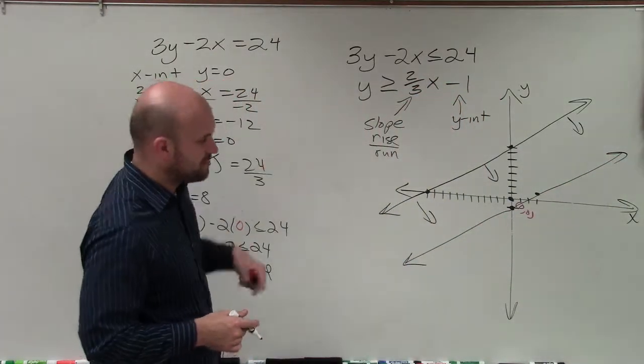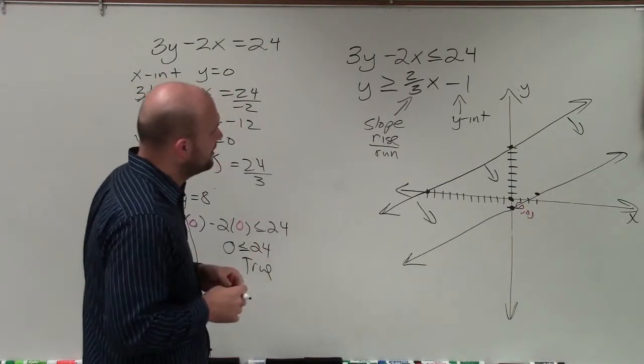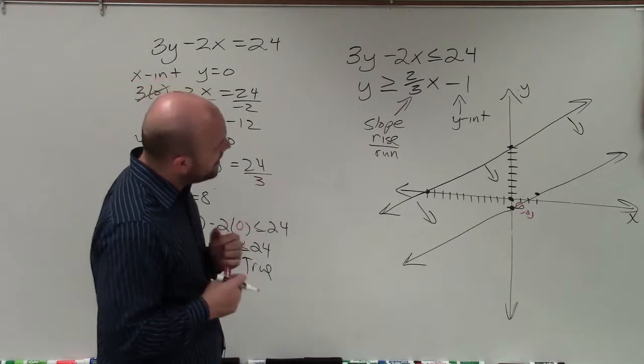Now looking at the problem, these are supposed to be parallel lines, because they have the same slope. I just didn't do that one in slope-intercept form. But now,